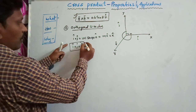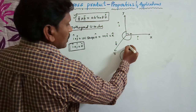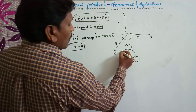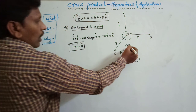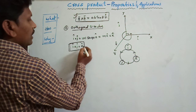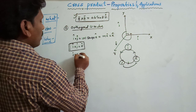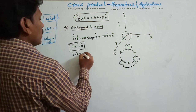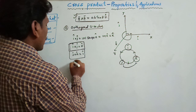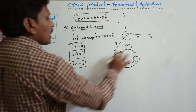From that expression we can understand there is a cyclic process: i cap, j cap, and k cap. So i cap cross j cap gives k cap. In the cyclic order: i×j gives k, and j×k gives i cap.